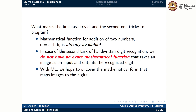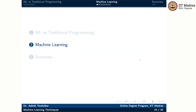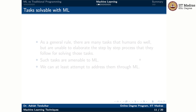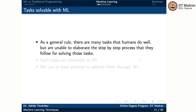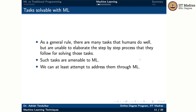With machine learning, we hope to uncover the exact mathematical form that can take an image as input and output the digit present in that image. In general, machine learning can do tasks that humans are good at but are unable to elaborate the step-by-step process of solving. Such tasks can at least be attempted through machine learning.